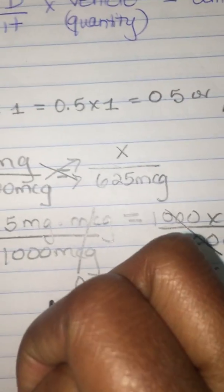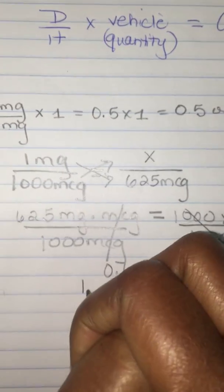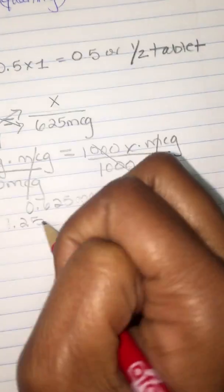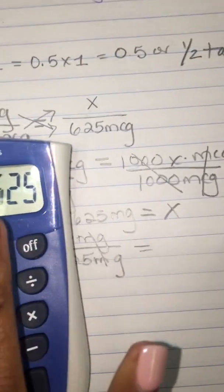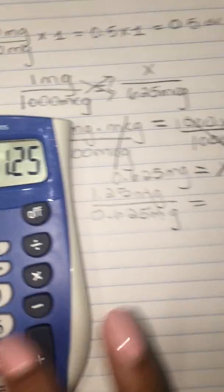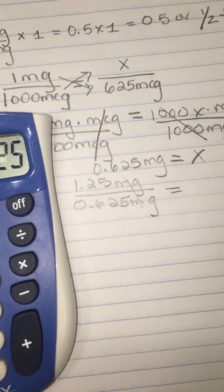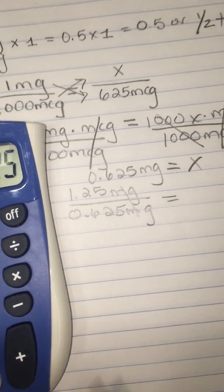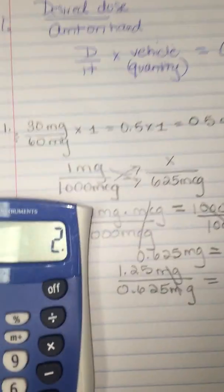So you're going to do 1.25 milligrams over the amount on hand. These will cancel. Let me put this in the calculator here. 1.25 divided by 0.625 gives two tablets.